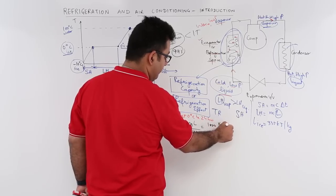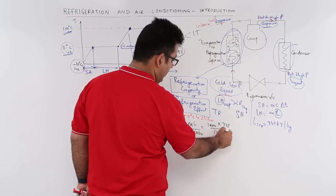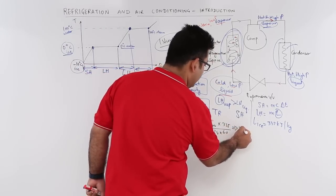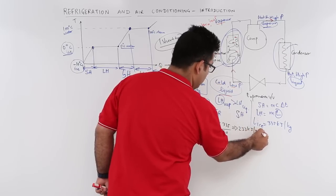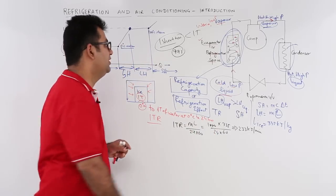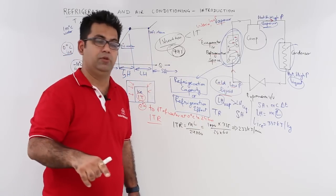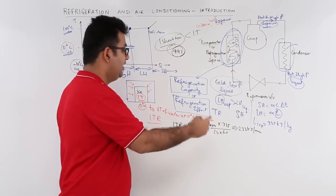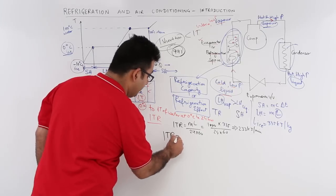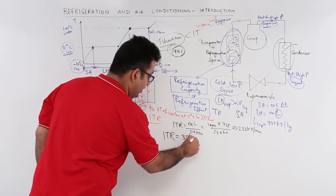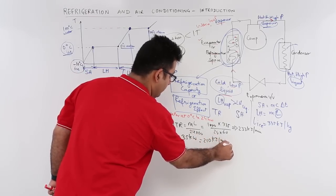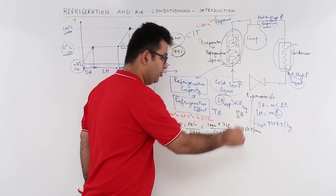M into 335 divided by 24 into 60 gives you approximately 233 kilo joule per minute — this is theoretical. For practical purposes, using 1 short ton rather than 1000 kg, 1 TR is equal to 3.5 kilowatt, which amounts to 210 kilo joule per minute. This is what you will be using for your numerical practice.